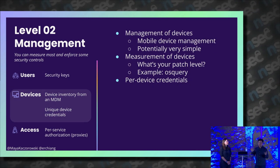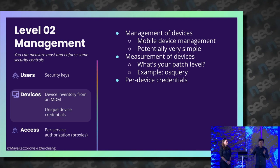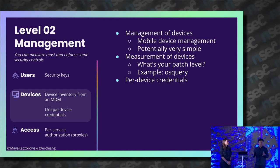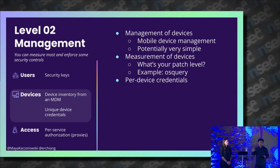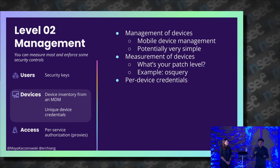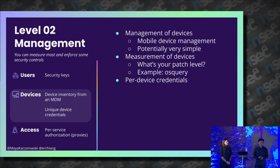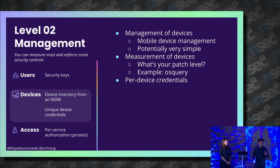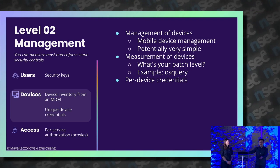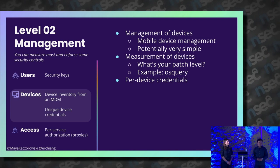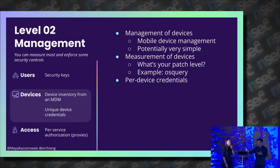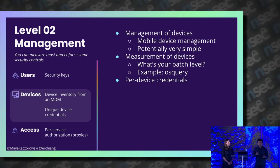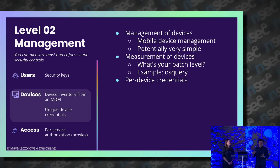At Level 2 for devices, we're going to start thinking about management of devices. You can initially start with MDM solutions for mobile devices, but it doesn't need to be that complicated. Some organizations just have a script that checks in occasionally, or use something like Puppet. The ability to ask your device what its patch level is, or to force it to update later, is fundamental. Having those basic capabilities is essential — if you don't, you just can't advance past this particular point.